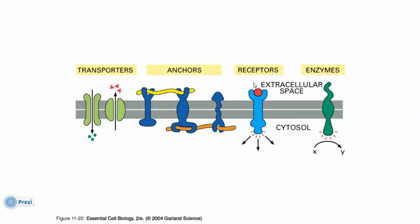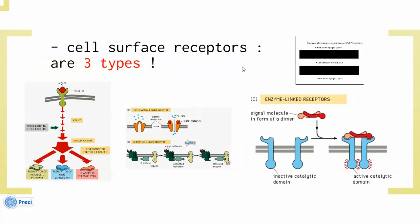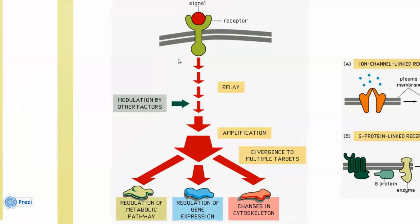Proteins function as transporters, receptors, enzymes, and other functions. Cell surface receptors consist of proteins, and we have three types. A receptor receives a signal — also called a ligand — which is a molecule that, when attached to a receptor, causes the receptor to perform a function or action. The signal molecule attaches to the receptor, the receptor relays a message that gets amplified to carry out a function in the cell.